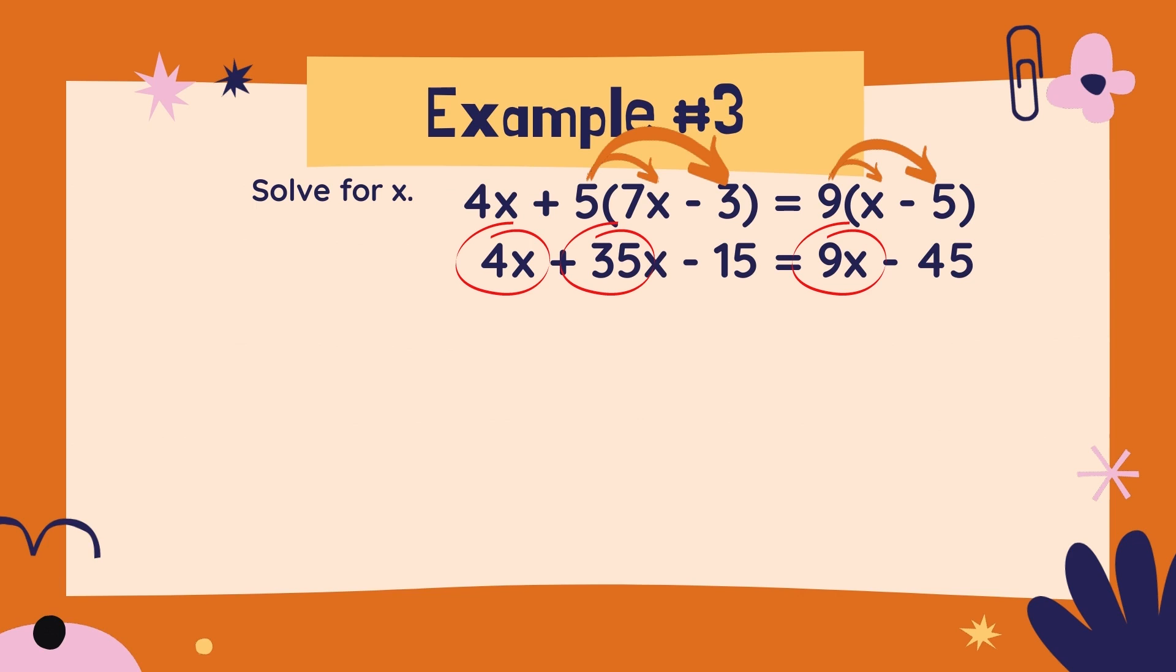By combining the 4x and the 35x. Both of them are positive, so we can just add them together. 4 and 35 is 39.